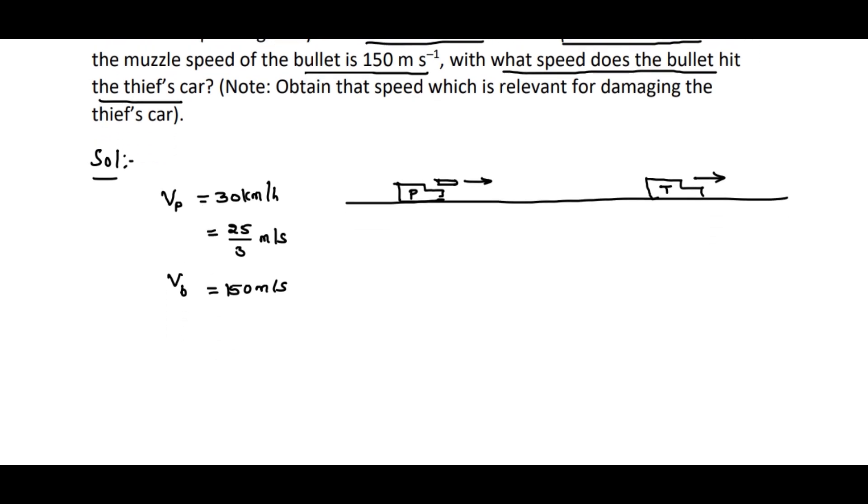Now we can write, actually for the bullet, additionally the police van is also giving some velocity. So therefore the relative velocity becomes relative speed of bullet with respect to ground is equal to velocity of the bullet plus velocity of the police van. Here, velocity and speed both are the same. Why? Because we are discussing only straight line motion, only the same direction. So no need to have confusion - velocity and speed both will be the same.